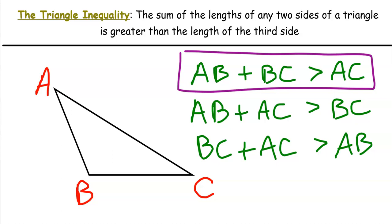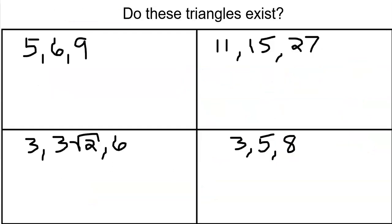We're most interested in whether the sum of the two shorter sides of the triangle is greater than the third side. Notice there's no 'or equal to' — because if AB plus BC equals AC, then B is on that segment and we have a segment, not a triangle. So what we can do with this is take potential side lengths and ask: do these triangles exist? Go ahead, pause the video, use the triangle inequality to determine whether they exist or not.